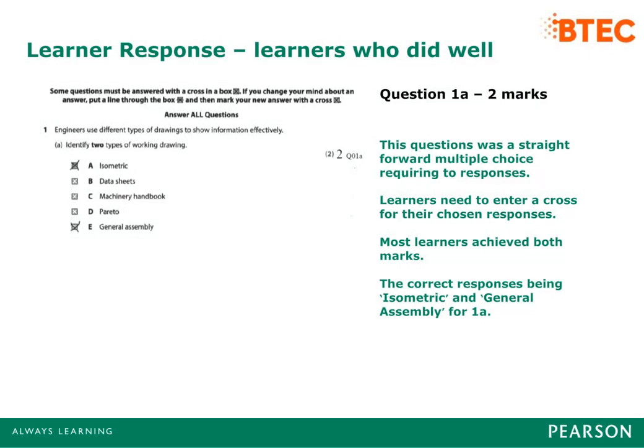Question 1a is a straightforward multiple choice. Learners need to enter two crosses for their chosen responses. Most learners achieved both marks, with the correct responses being isometric and general assembly.